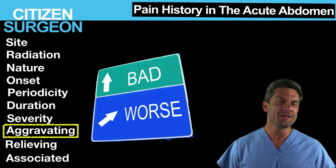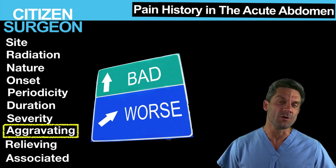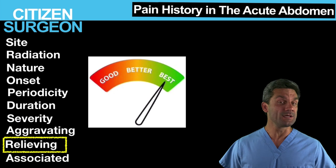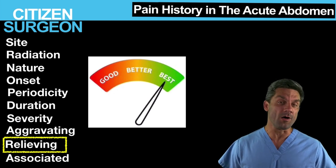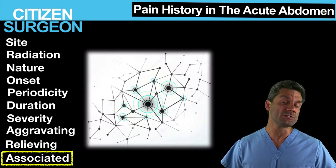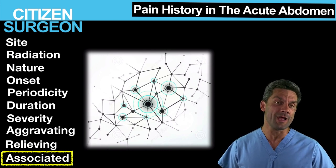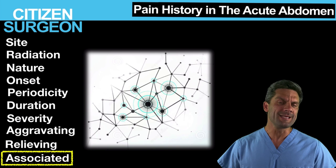Aggravating — what makes the pain worse? This could be moving, hopping, jumping, pressure, or eating. Relieving — does lying still relieve it? That would be typical of appendicitis. Whereas with a renal stone, lying still doesn't help at all — patients with renal stones would be moving all over the place, which is how you can distinguish it from appendicitis. Associated — these are the associated findings. In biliary disease, ask about jaundice, dark urine, pale stools, fevers, chills, and rigors. With appendicitis, ask about diarrhea — more in keeping with perforated disease — and signs of sepsis.